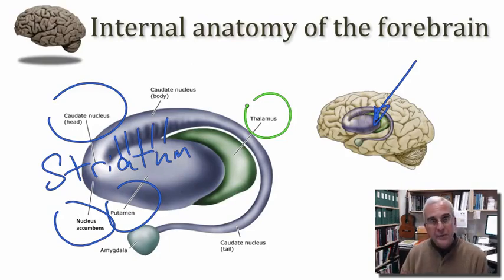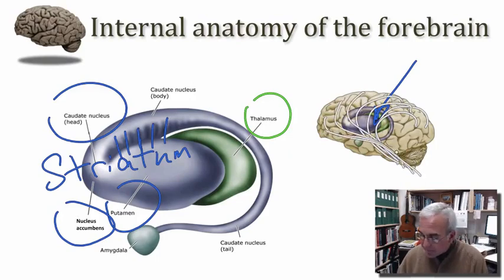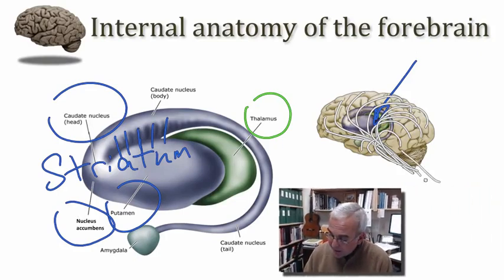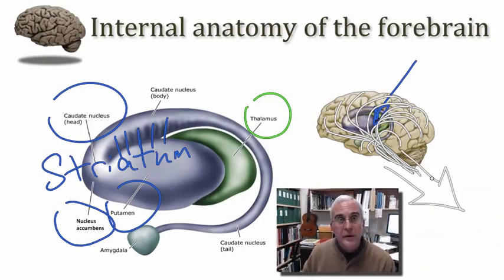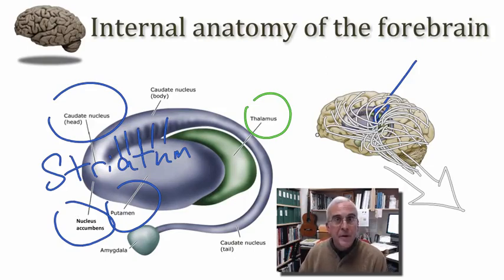The internal capsule is this massive system of white matter that runs between the cerebral cortex and everything that falls below it — including the thalamus, the brain stem, and the spinal cord. Many of these axons are heading in the descending direction, with some going all the way down into the spinal cord. Other axons, namely those coming from the thalamus, are actually projecting back to the cerebral cortex. So in each hemisphere we have this massive fan of white matter that comes together in a compact bundle and passes between parts of the basal ganglia and the diencephalon as it courses from the forebrain down into the hindbrain.